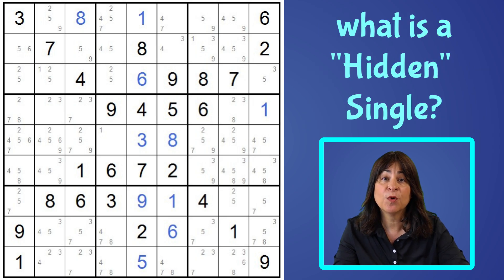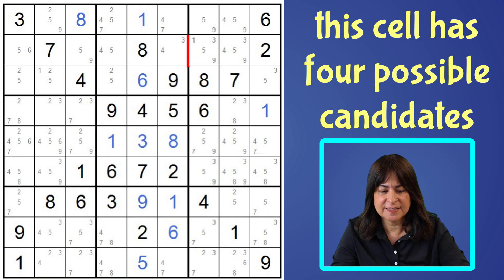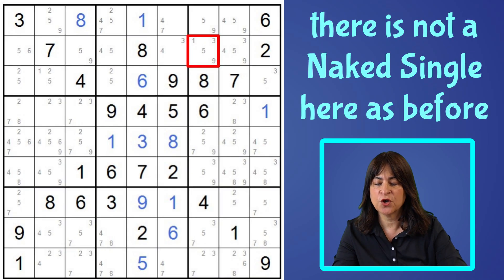Block five has all the numbers filled in except for the one and eight, and this cell can't be a one because of this one, so this cell can only be an eight. So I think we understand the term 'naked' as it applies to a naked single. Now what about the term 'hidden' as it applies to a hidden single? Let's take a look at this cell — it has the candidates one, three, five, and nine.